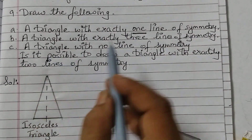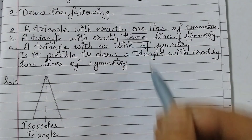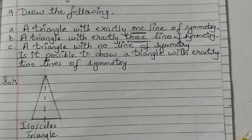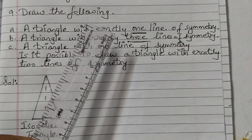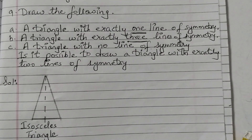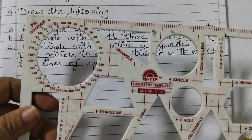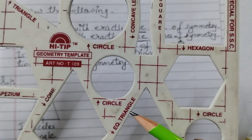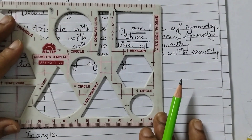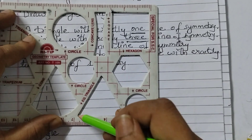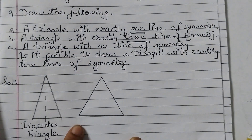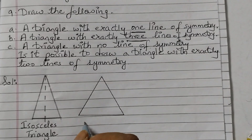Next we have to draw a triangle with exactly three lines of symmetry. For three lines of symmetry you need to draw an equilateral triangle. An equilateral triangle has three equal sides. We can use a ruler to draw an equilateral triangle, or if your teacher allows you, you can use a shape stencil. This is a shape stencil — it's written here 'EQ triangle', that means equilateral triangle. So I'll just place it here and trace it. Now all three sides are equal and this is an equilateral triangle.